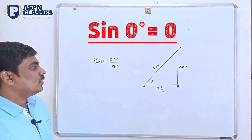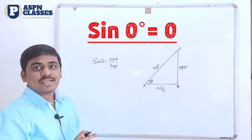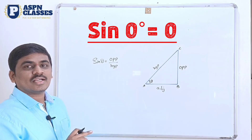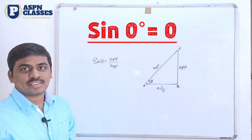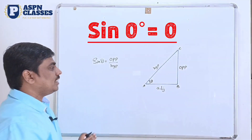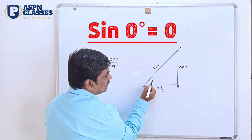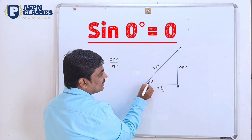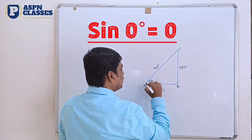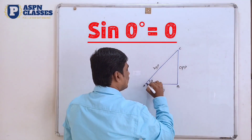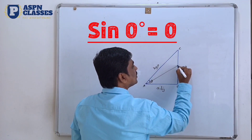Sin theta is equal to opposite by hypotenuse. This is our formula. Now, if we want theta to equal 0, we have zero as our answer. So we are going to take this scenario and observe here. So this is an angle there, and I am going to look at the opposite side.